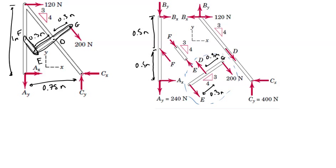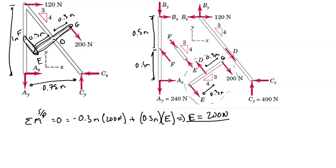Taking a moment about point D, taking a moment from the system of EDG about D, we have that E is 200 newtons in the direction drawn.